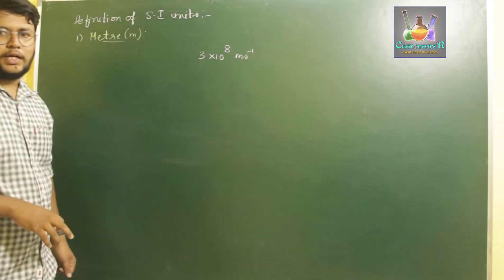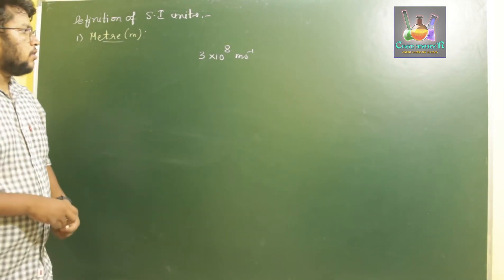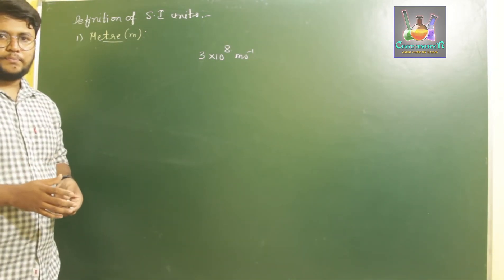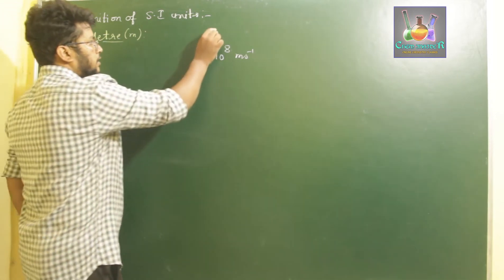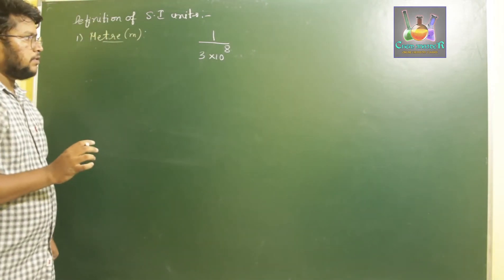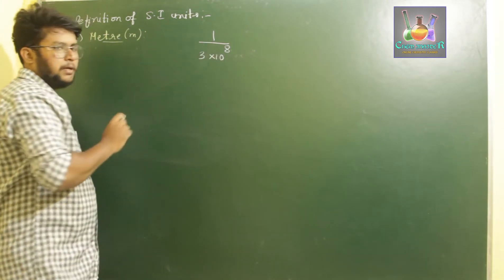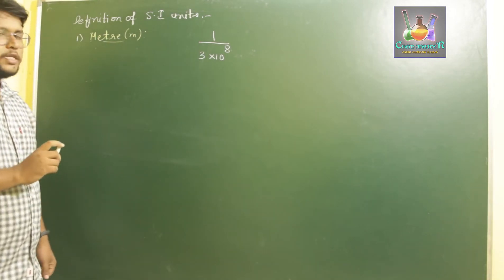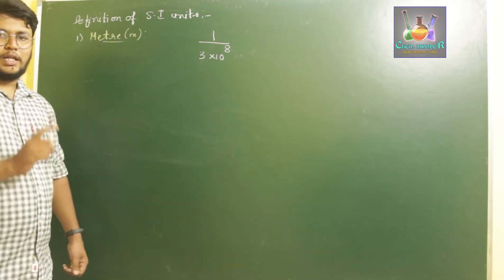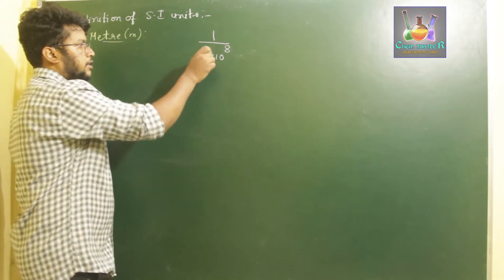The distance traveled by light in vacuum for 1/(3 × 10⁸) of a second is called a meter. The SI unit meter is defined as the path covered by light in vacuum for 1/(3 × 10⁸) times of a second.